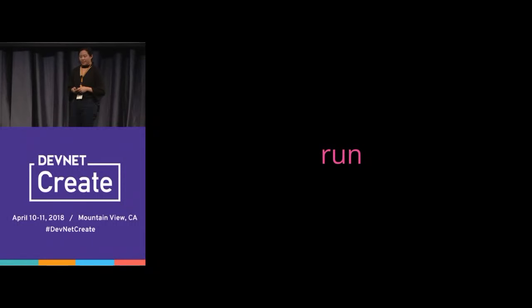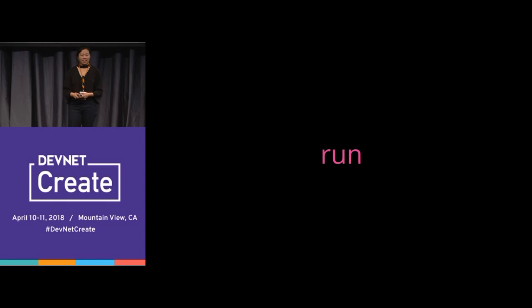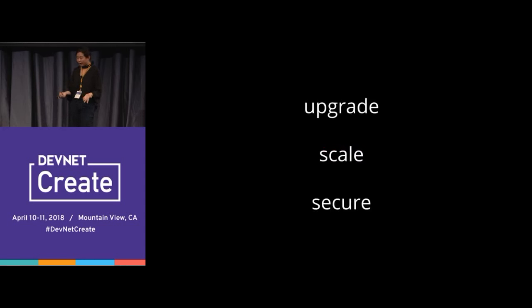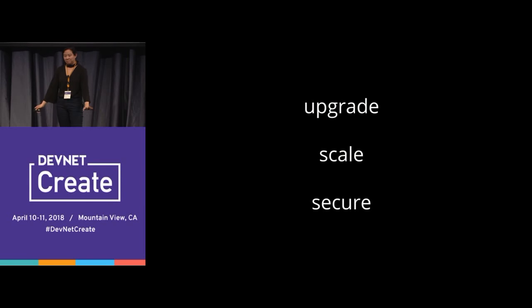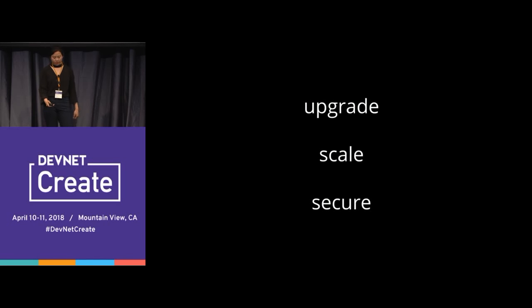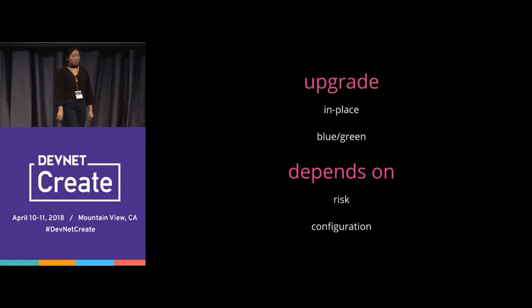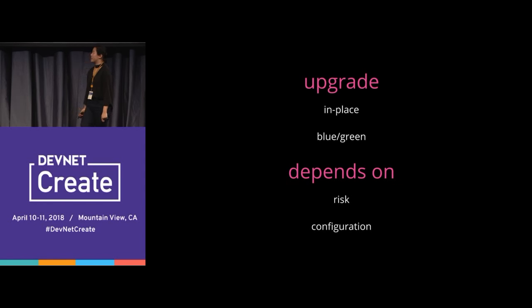Run — this is the last step of how to treat your network like a container. Run can mean upgrade, scale, or secure — all of these could have their own talk. I'm only going to focus on upgrade today. Upgrade, whether in-place or blue-green, depends on risk and configuration. Sometimes you don't want to do it in-place, but you have to anyway. And sometimes you might want to entertain blue-green.